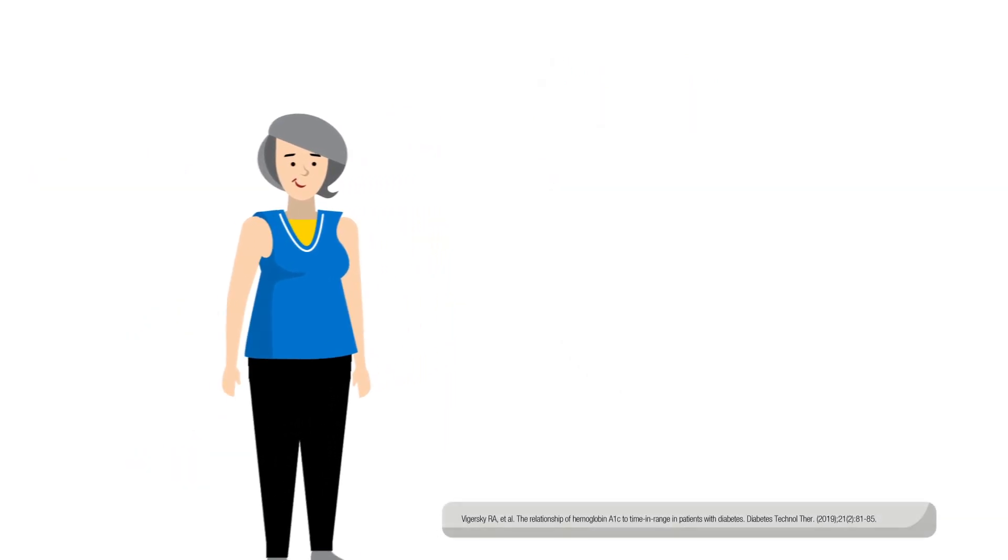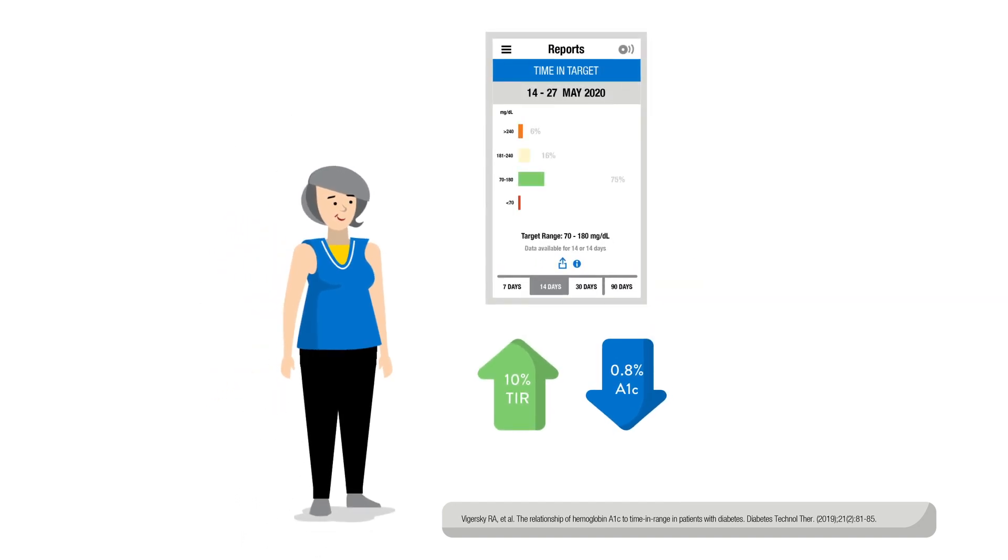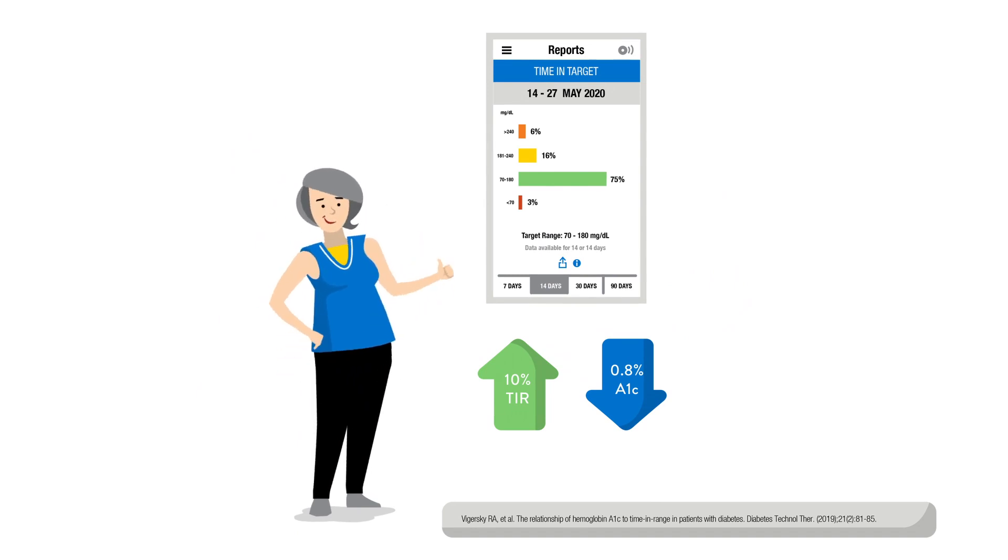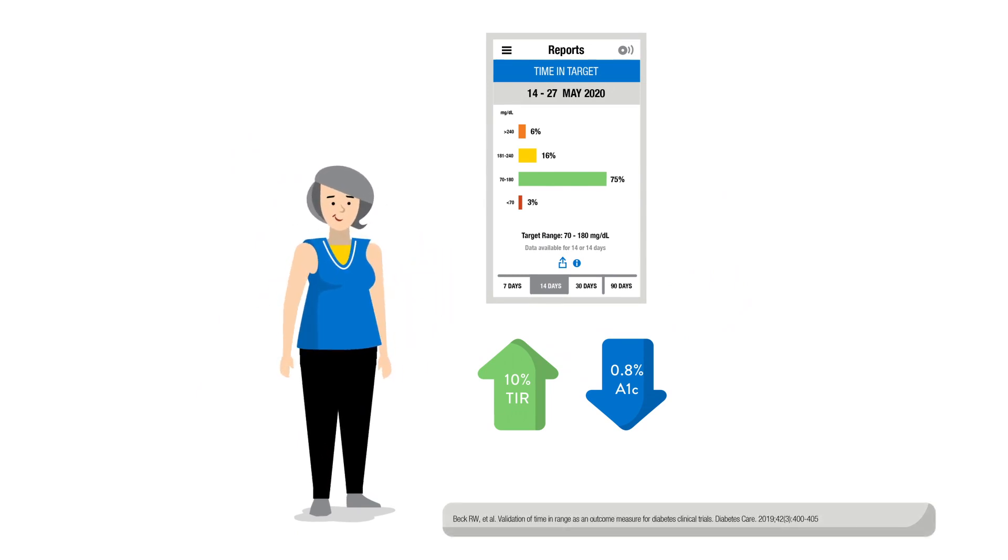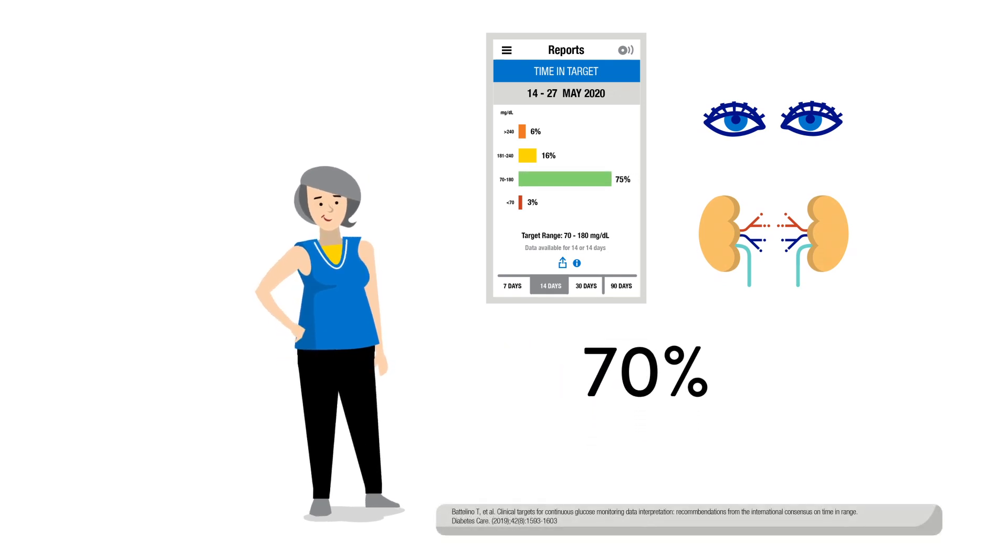A study has shown that every 10% increase in TIR can lower A1c by about 0.8%. Increasing time spent in range has a positive impact on glucose management and can lower risk of long-term eye and kidney complications. Guidelines recommend spending at least 70% of time in range.